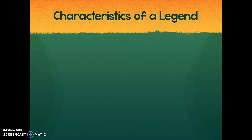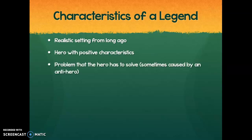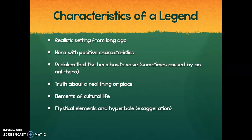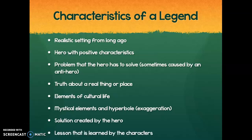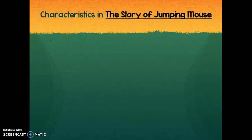You may have noticed in the story of Jumping Mouse that something did come into existence — we're going to talk about that. Here's a reminder of the characteristics we're looking for in this legend: a realistic setting from long ago, a hero with positive characteristics, a problem the hero has to solve sometimes caused by an antihero, a truth about a real thing or place, elements of cultural life, mystical elements and hyperbole, a solution created by the hero, and finally a lesson learned by the characters.